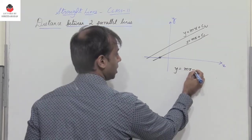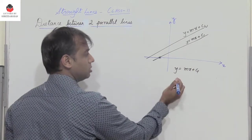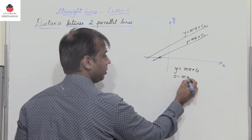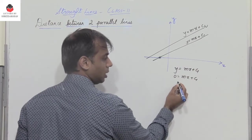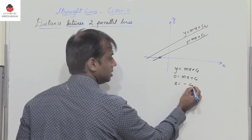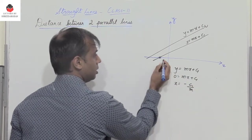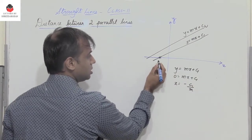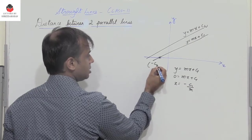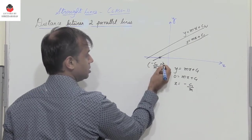So you have y equals mx plus c1, put y equal to 0. So 0 equals mx plus c1, or x equals minus c1 by m. So the coordinate of this point is minus c1 by m comma 0.